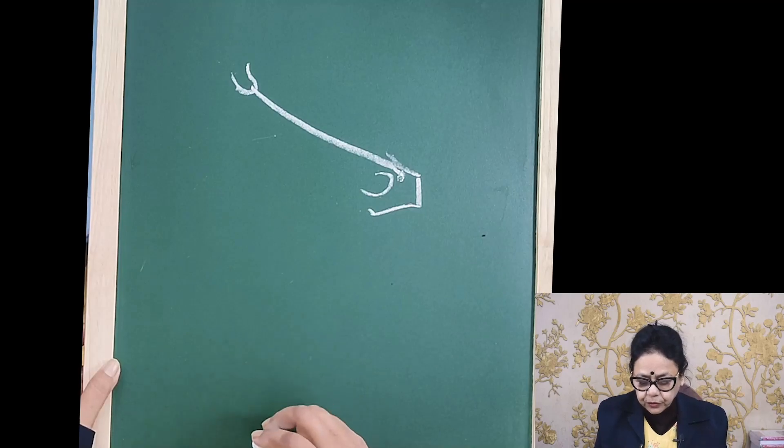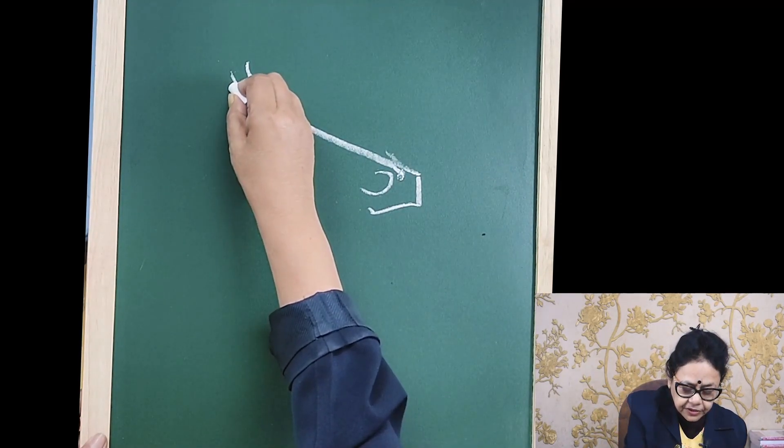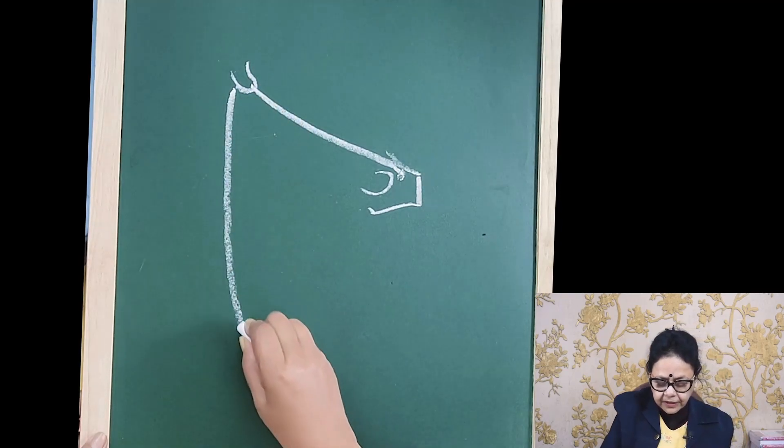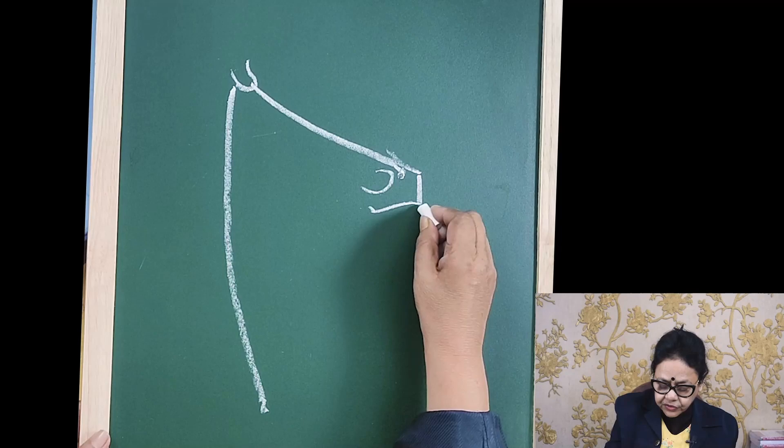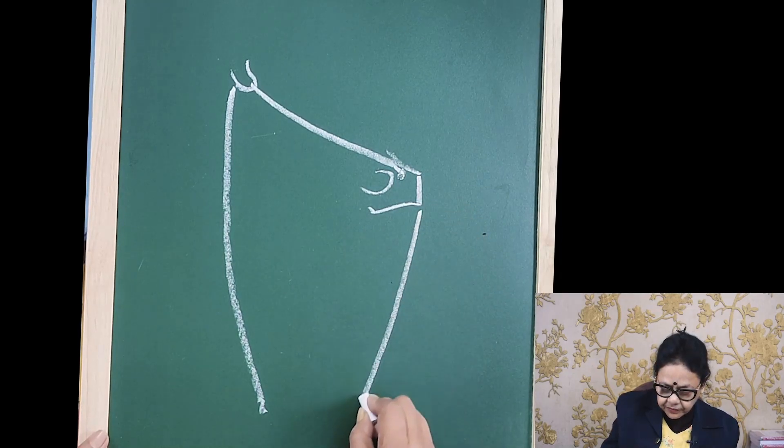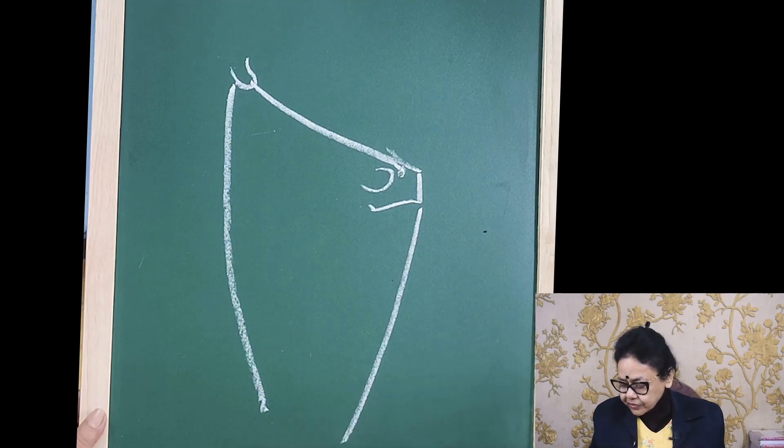This is the pubic tubercle. Now you draw on the lateral side of the thigh and the curvature is towards the medial side. Next you will see the medial side of the thigh and the curvature is on the lateral side.